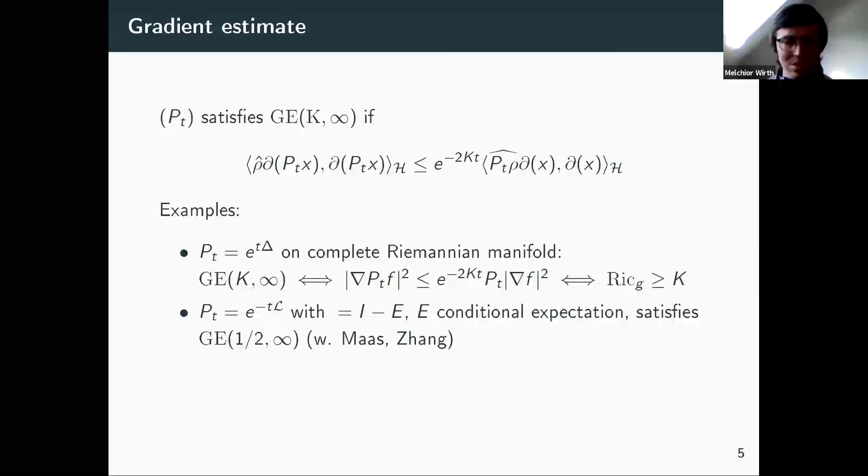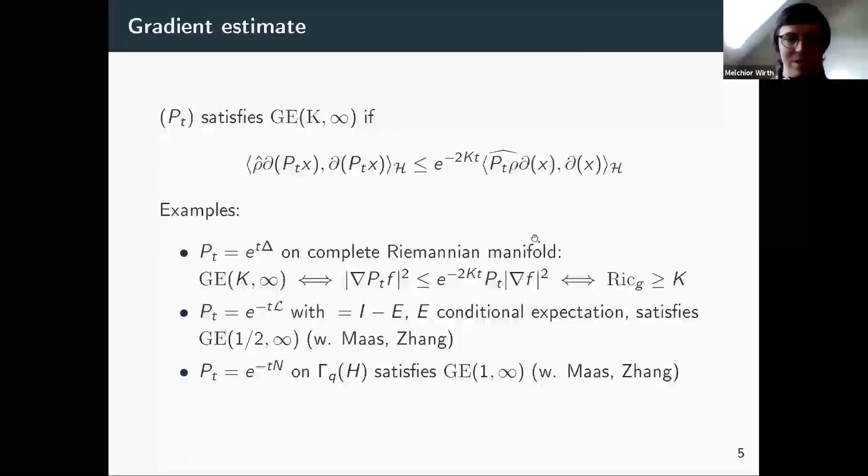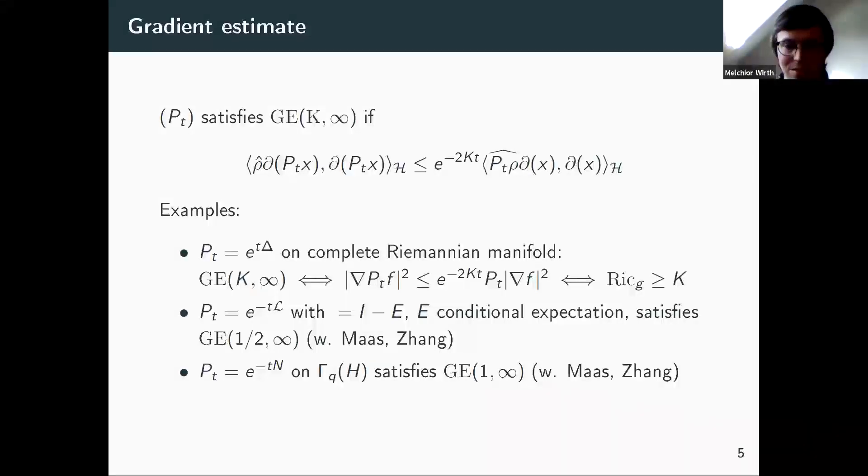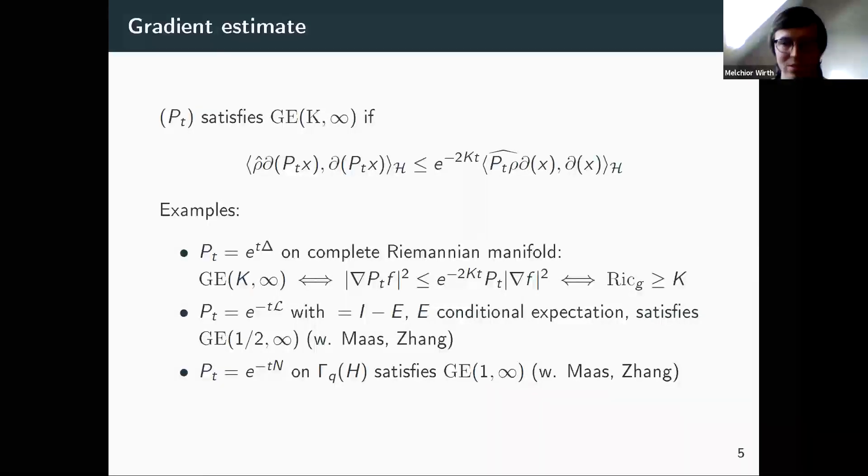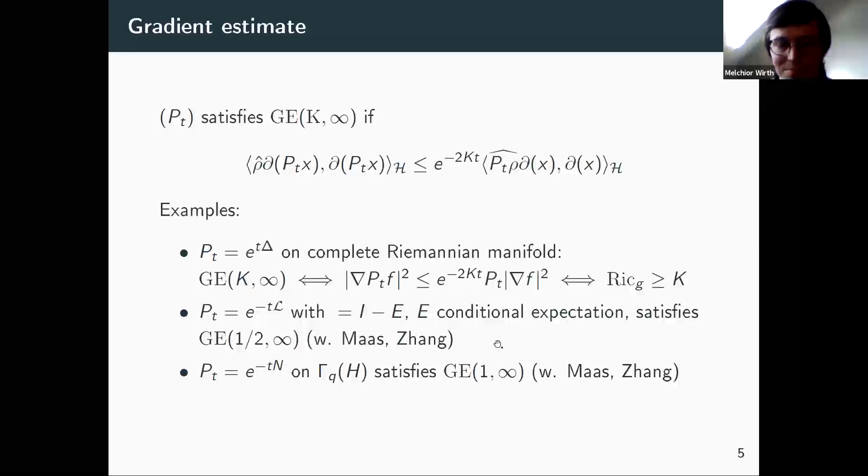And there's also some other examples, really non-commutative ones. So first, if my QMS is generated by—this should be an L—so the generator is identity minus conditional expectation, then I always have this gradient estimate with constant one-half. And if I look at the semi-group generated by the number operator on the q-Gaussian, or the same works on mixed q-Gaussian ones, at least if all q_ij are smaller than one in absolute value, then I have this gradient estimate with constant one. And these last two results, of course, important to give credit, this comes from work in progress with Jan Maas and Haonan Zhang, also from IST Austria.